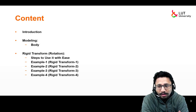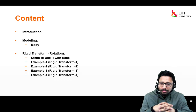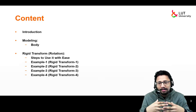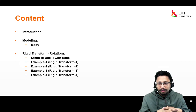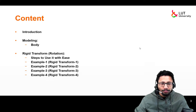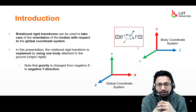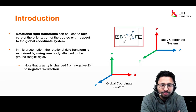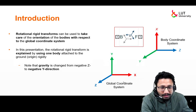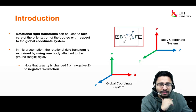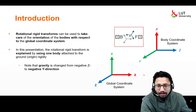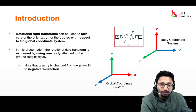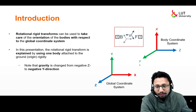I will simply show you using a one-body example, and then there are certain steps that I follow every time when I model rigid transforms in my Simscape Multibody models, and a couple of examples. Rigid transforms can be used to take care of the orientation of the bodies with respect to the global coordinate system. Using the rotational rigid transform you can transform the axes with ease.